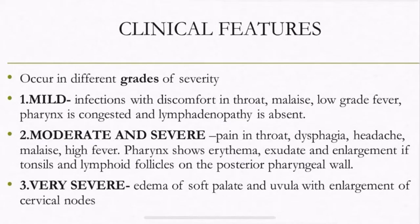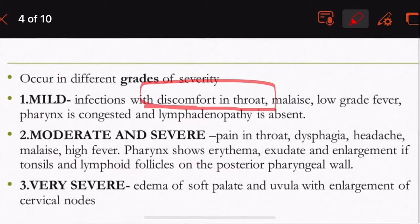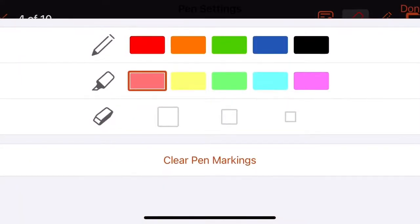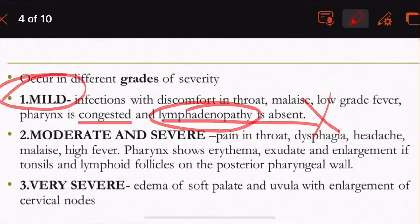Now we move on to the clinical features — what the patient presents with. Pharyngitis occurs in different grades of severity: mild, moderate, severe, or very severe. In the mild grade, it starts with discomfort in the throat, malaise (restlessness and uneasiness), and low-grade fever. Locally, the pharynx is going to be congested. Lymphadenopathy is absent in the mild grade.